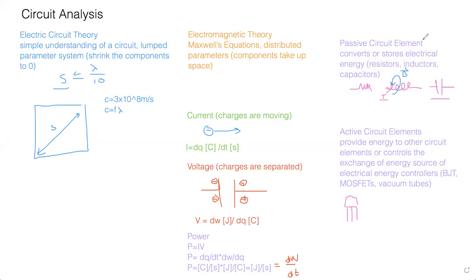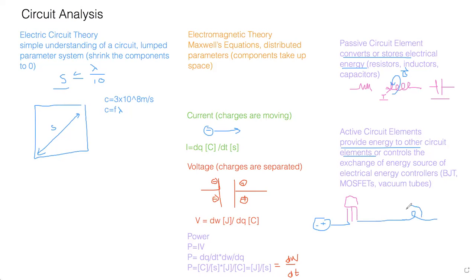The main difference: passive circuit elements can convert or store electrical energy — resistors, inductors, capacitors. Active circuit elements provide energy to the rest of the circuit. A transistor controls whether the rest of the circuit gets energy. With a light bulb in the circuit and a voltage source, the transistor allows the current to flow to the bulb. For a BJT it's current-controlled; for a MOSFET it's voltage-dependent.